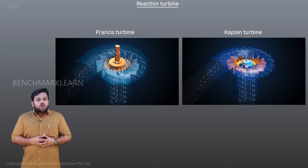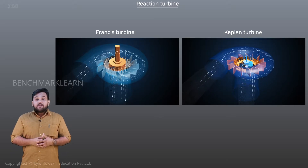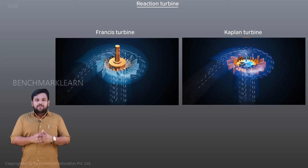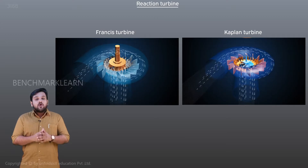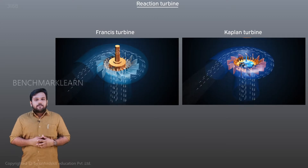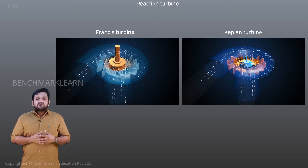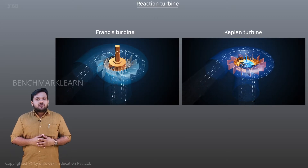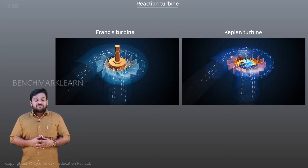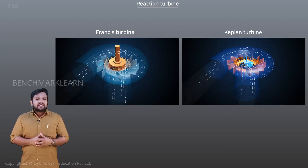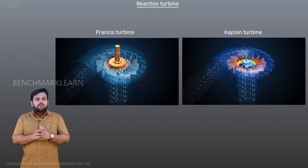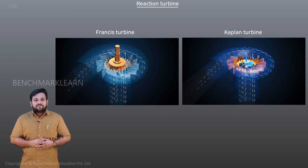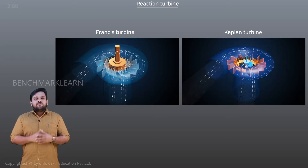When water flows over them, because of its shape, there is a reduction in pressure along the blade. Its velocity also changes along the blade. Hence, the water indirectly exerts a thrust force on the turbine blades. This force rotates the turbine blades.